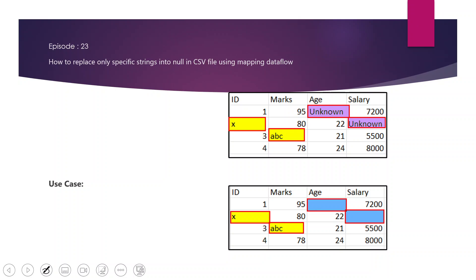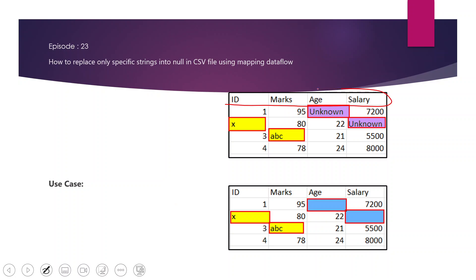The requirement is quite similar to what we achieved in the previous video, where we tried to replace all the strings present in the CSV into null, because all the columns expect integer type values but we have a few non-integer, that is string type values as well.